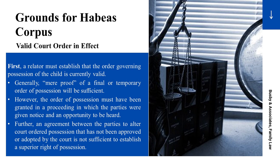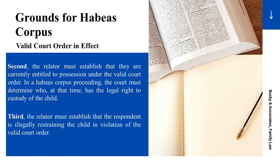First, the relator must establish that the order governing possession of the child is currently valid. Generally, mere proof of a final or temporary order of possession will be sufficient. However, the order of possession must have been granted in a proceeding in which the parties were given notice and opportunity to be heard. Further, an agreement between the parties to alter a court order of possession that has not been approved or adopted by the court is not sufficient to establish a superior right of possession.